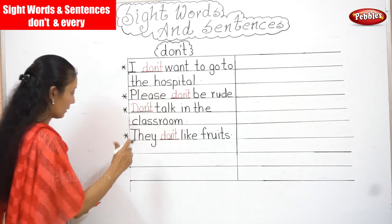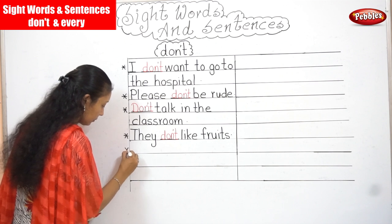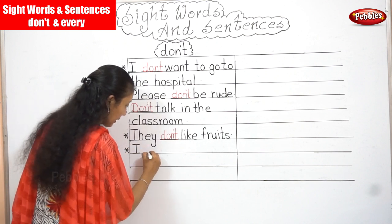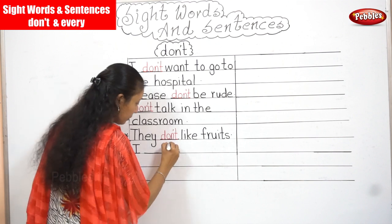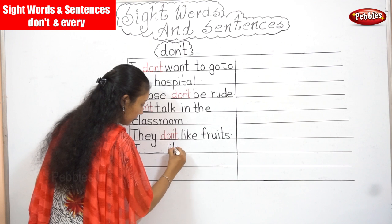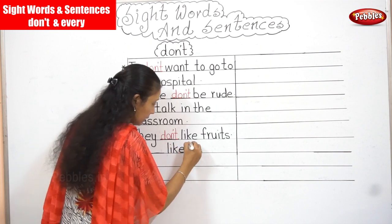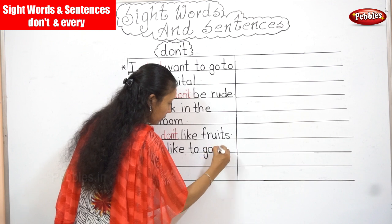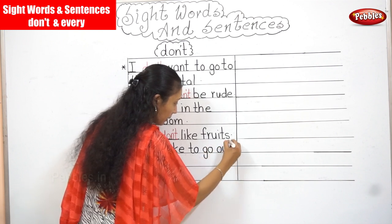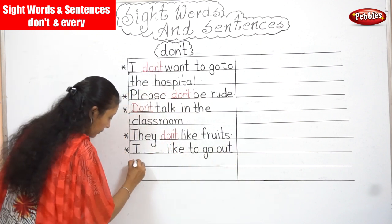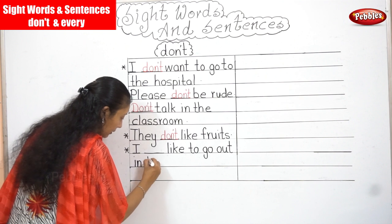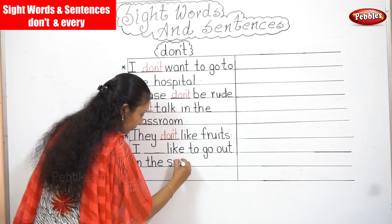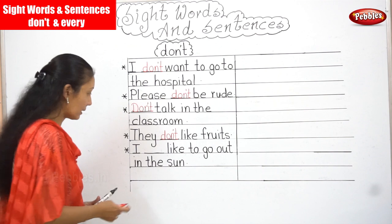One more sentence: I — like to go out in the sun. Your word again is 'don't'. I don't like to go out in the sun.